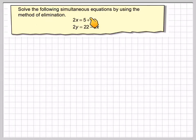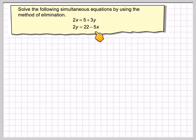Solve the following simultaneous equations by using the method of elimination. We've got 2x is equal to 5 plus 3y, and 2y is equal to 22 minus 5x.